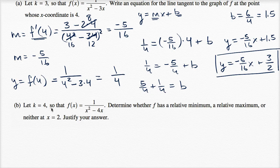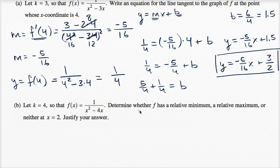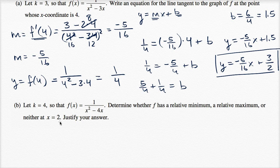Let k equals four so that f of x is equal to one over x squared minus four x. Determine whether f has a relative minimum, a relative maximum, or neither at x equals two. Justify your answer.